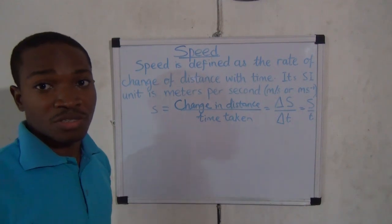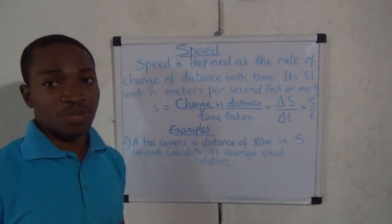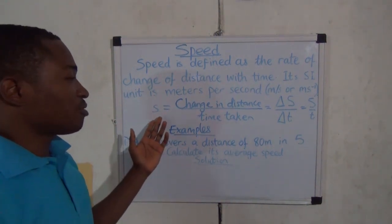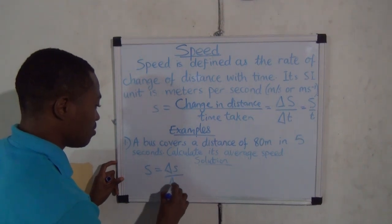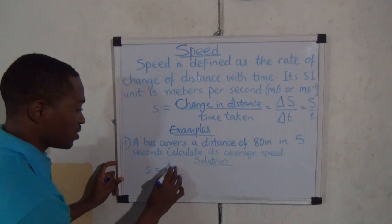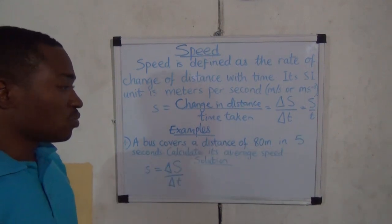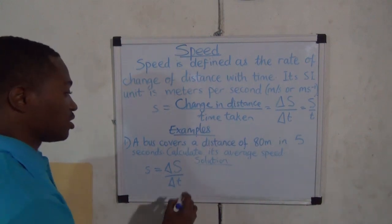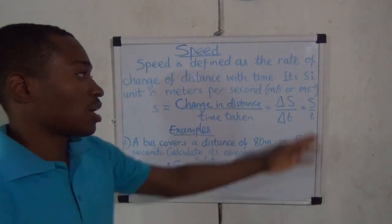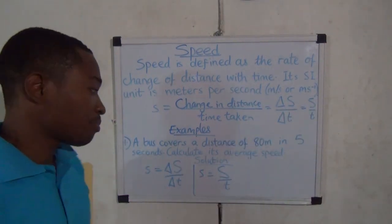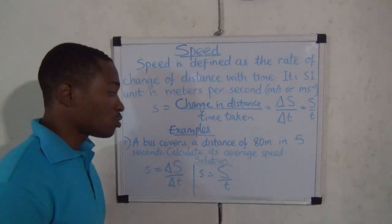Let's take some examples. Our first example: a bus covers a distance of 80 meters in 5 seconds. Calculate its average speed. The formula for solving speed is change in distance divided by change in time. Since we are not given an initial position, we go straight to: speed equals total distance covered divided by time taken. The first thing you do when solving a problem is to state the formula.